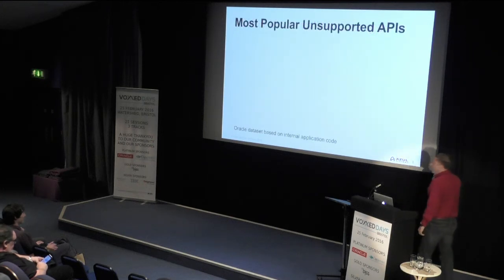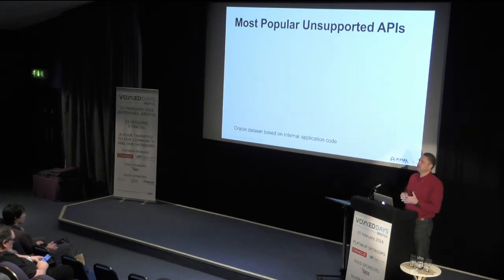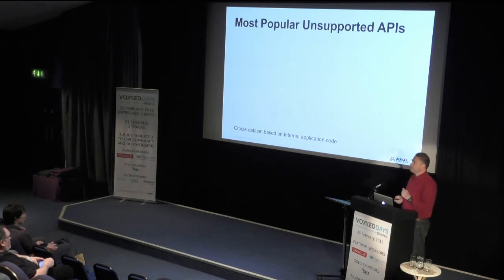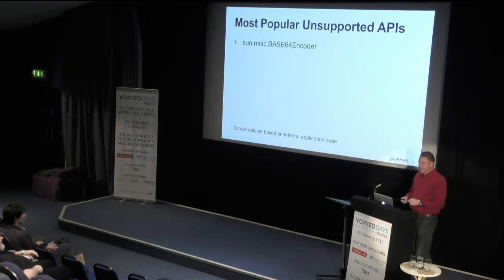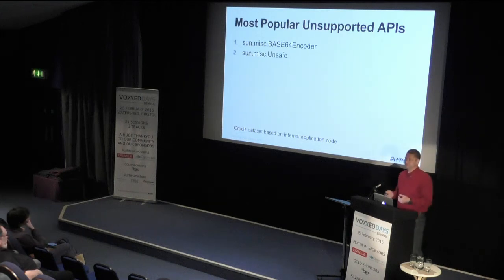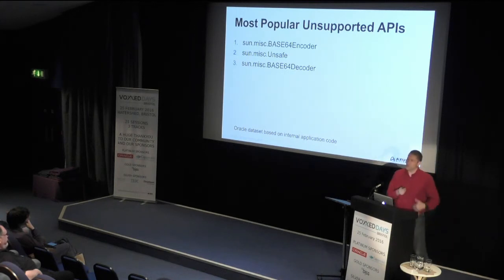Oracle did analysis of a large set of their own internal application code to find the most popular unsupported APIs they had used. The number one most popular unsupported API was the base64 encoder. Second was sun.misc.Unsafe — very popular. Third was the base64 decoder. There were others as well, but these were the top three unsupported APIs used internally.